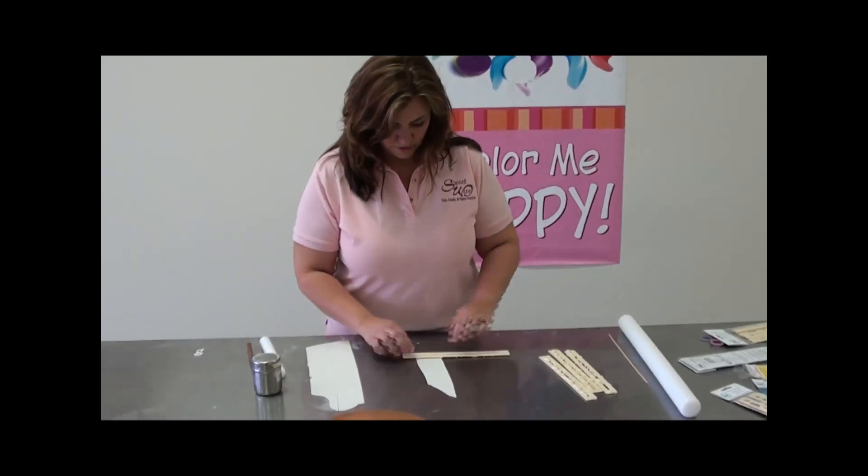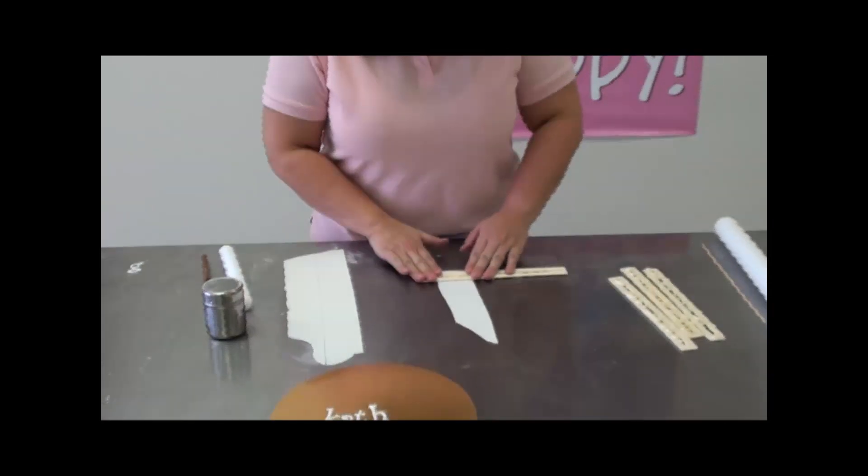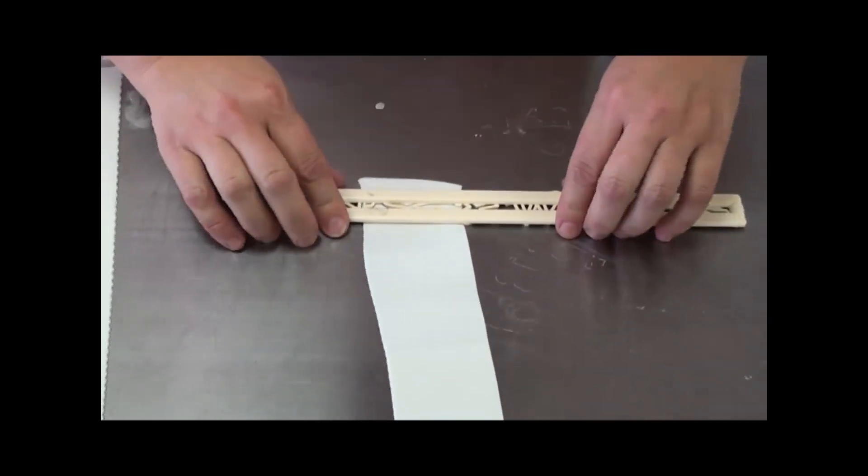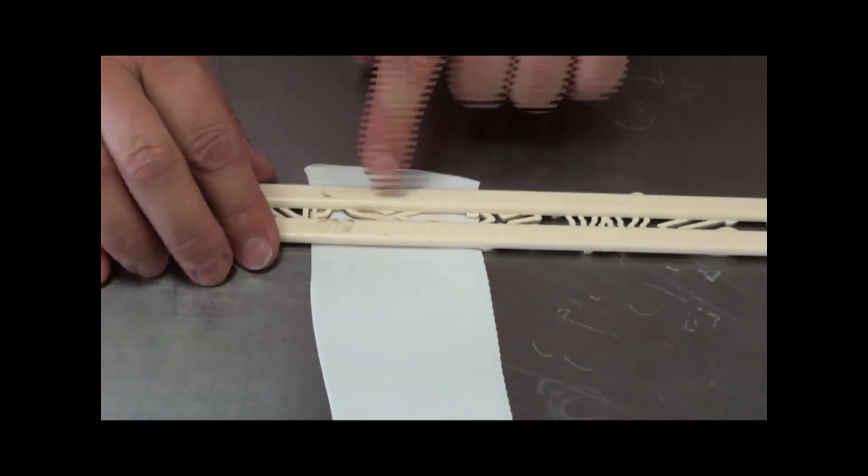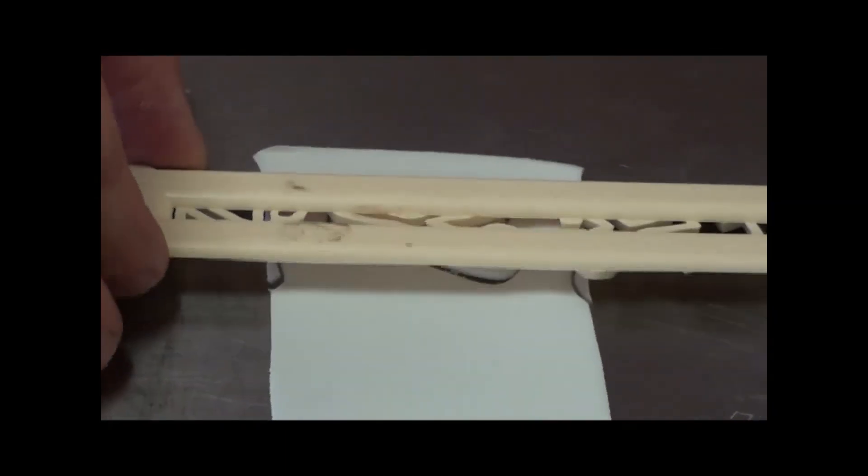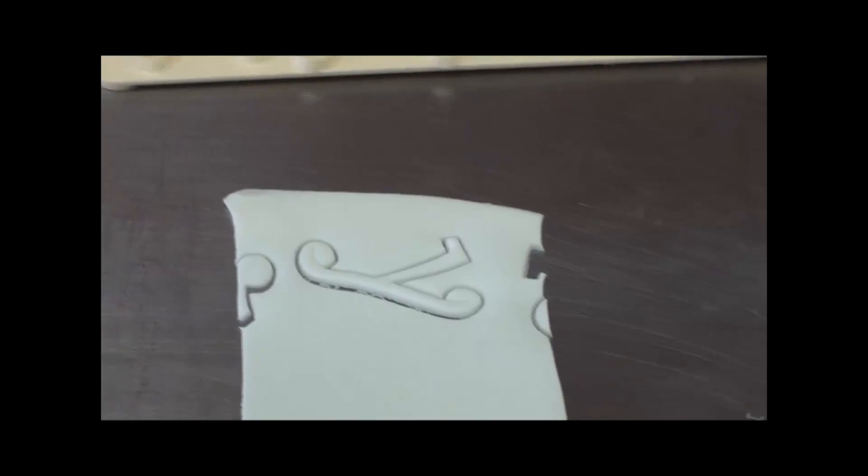You want to press down in there, give it a good little jiggle so it has a nice clean cut. You don't want jagged edges. You also want to make sure that the gum paste is not popping through the back so it won't create a vacuum that it sticks in there. And it releases just like that.